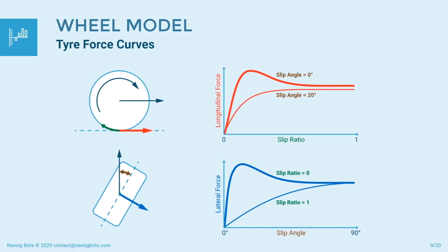In the next part of the presentation I will discuss the wheel model and my original approach to simulating it. A wheel generates two contact force vectors: longitudinal and lateral. The magnitude of both forces is determined by friction between the tire and the surface. The longitudinal force depends on a slip ratio. The slip ratio is calculated as the difference between a free rolling speed and the actual rolling speed, divided by the free rolling speed. The lateral force depends on a slip angle. The slip angle is the angle between the direction in which a wheel is pointing and the direction in which it is actually traveling.